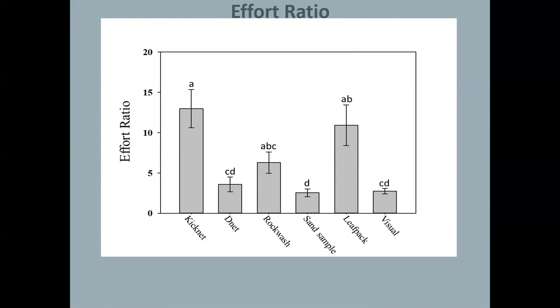And lastly, effort ratio. So where are we getting the best return on our time? The effort ratio is highest numerically for Kicknet, although statistically similar to Rockwash and Leaf Pack. And then the D-Net, sand sample and visual are having lower effort ratio. Remember that visual did give us a bit higher richness. So it's doing that with a lower effort ratio. Leaf Pack had a higher effort ratio. It also had higher abundance and it had lower diversity. So we're kind of getting the hint that leaf pack may not be a strong player here.